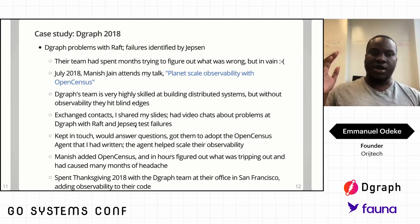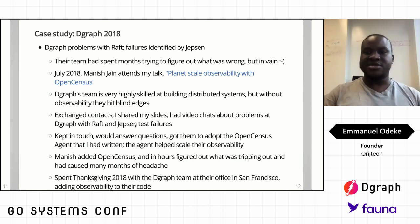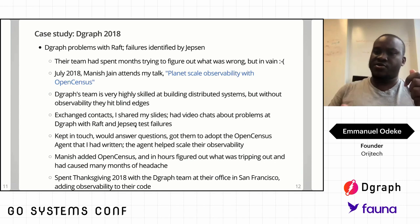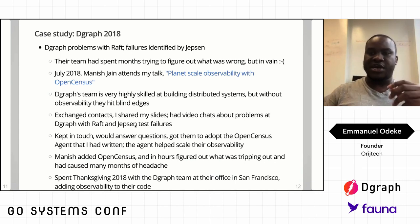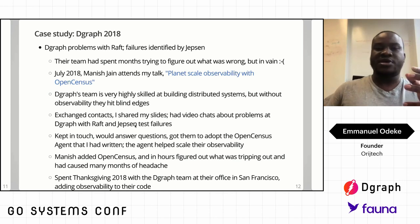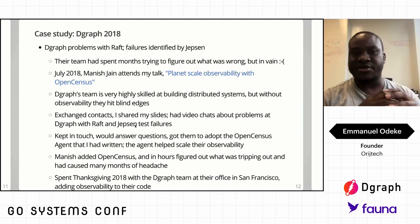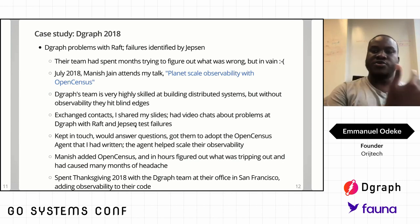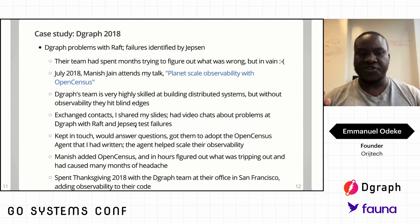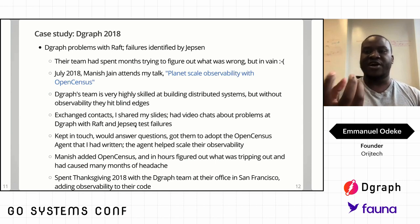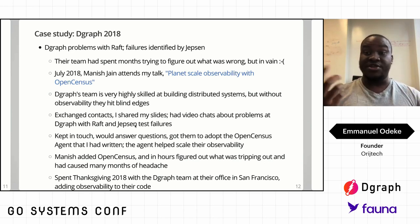Two weeks after that, we got in touch, had video calls, and he explained the problems. I sent him more information on how to use OpenCensus, which I was building, and how to integrate it into their app. Within hours — he has written about this in the DGraph blog — within hours of applying OpenCensus, he found out exactly what was going on. Their consensus protocol using Raft was getting re-proposals that were timing out, and they didn't know why. By applying observability, they were able to get that sorted out.